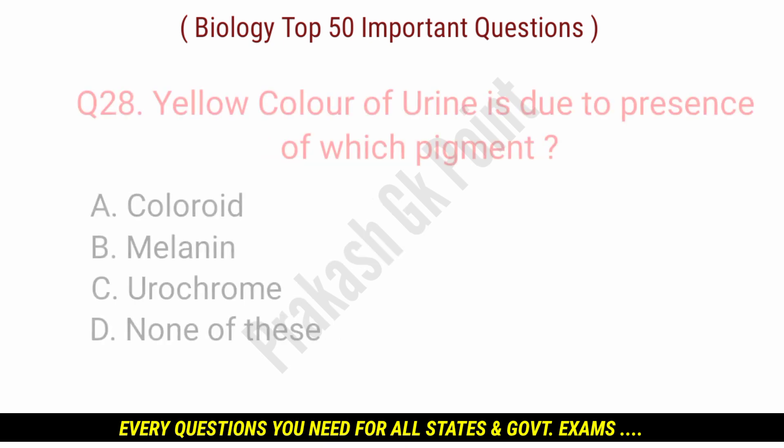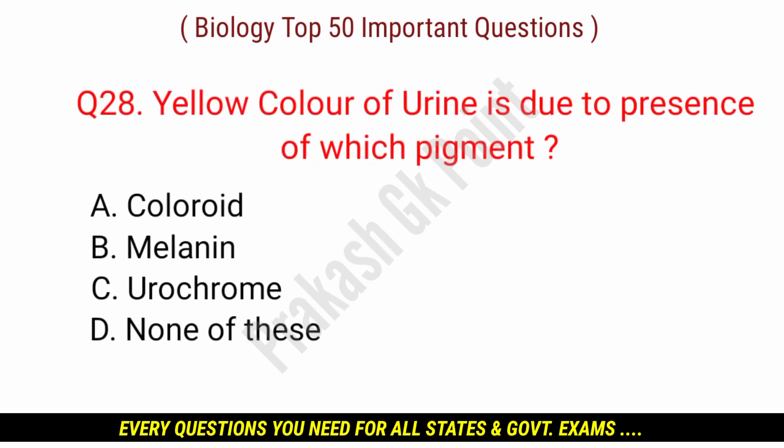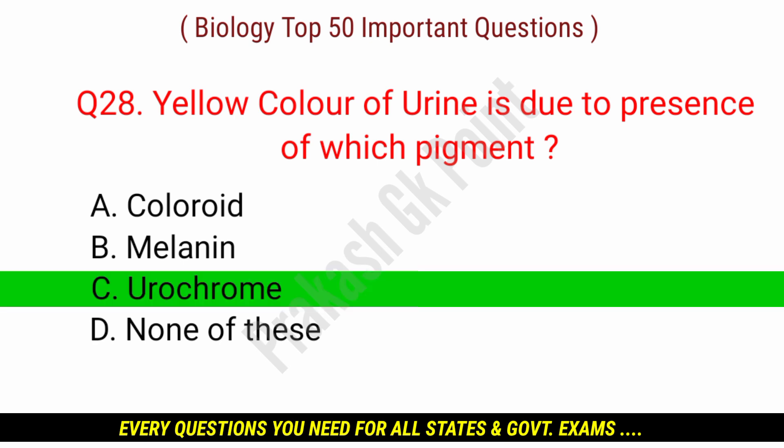Next question: the yellow color of urine is due to the presence of which pigment? Answer: option C — Urochrome.